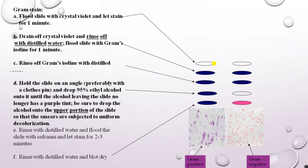After the secondary step, decolorize the smear with 95% ethanol. This step requires care — hold the slide at an angle, preferably with a float pin, or use your thumb and index finger. Drop 95% ethanol onto the slide until the alcohol leaving the slide no longer has a purple tint. Drop the alcohol onto the upper portion of the slide so the smear is subjected to uniform decolorization — otherwise the smear will not be uniformly decolorized and you will not be able to distinguish gram positive from gram negative bacteria.